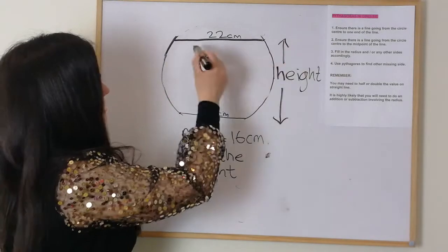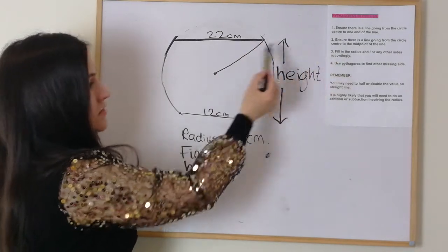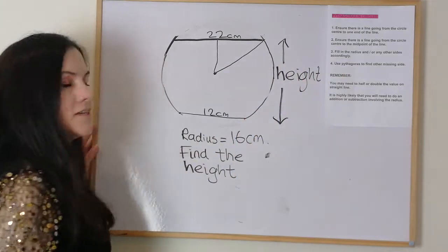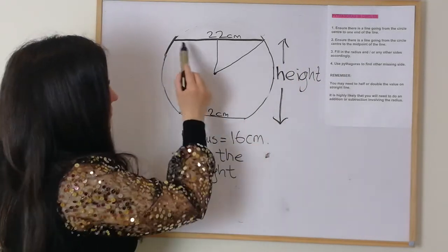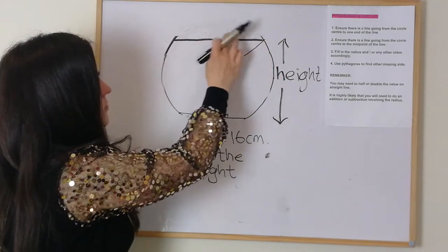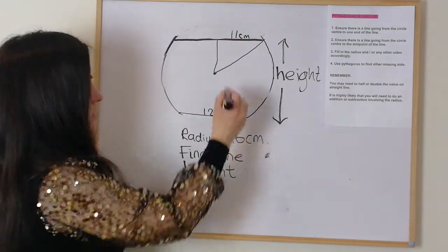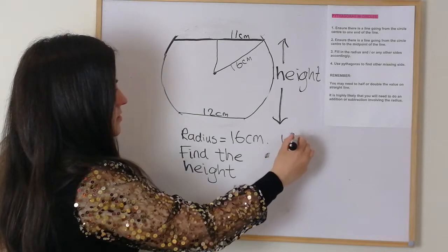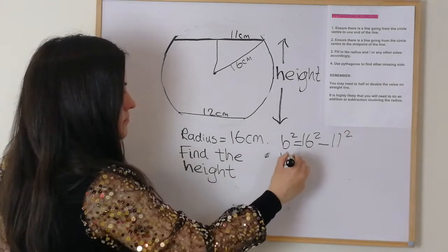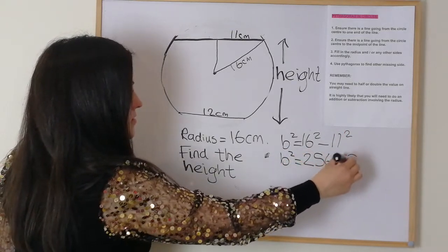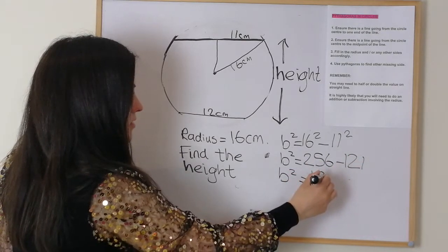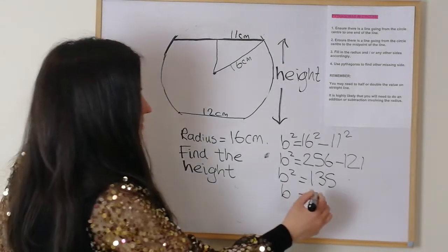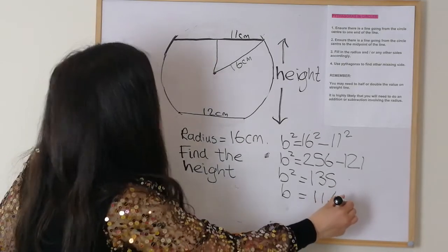For the top line: step one, ensure there's a line from the circle centre to one end. Step two, ensure there's a line to the midpoint. Step three, fill in the sides — the line is 22 across, so we half it to get 11. The radius is 16. Then Pythagoras: B² = 16² − 11² = 256 − 121 = 135, so B = √135 = 11.6. That's this part here.